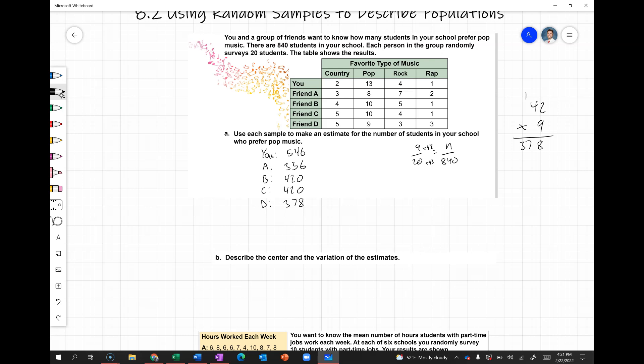And then for the range, we're just going to take our largest value, 546, and subtract our smallest value, 336, and we'll get 210. So that's a pretty big range. Maybe not the most accurate measure of center based on that, but that's okay. So let's look at this next example.